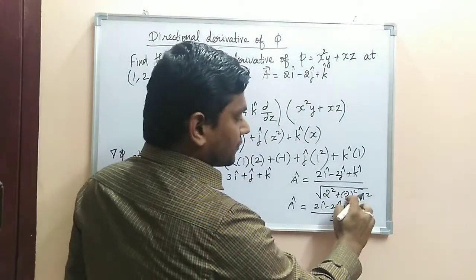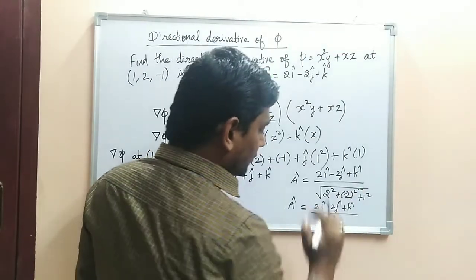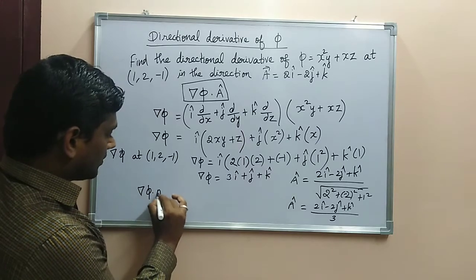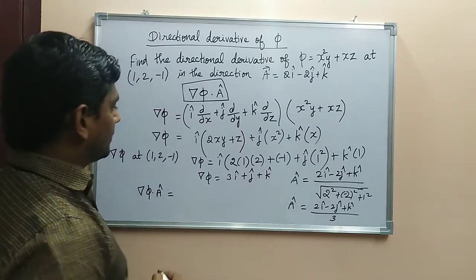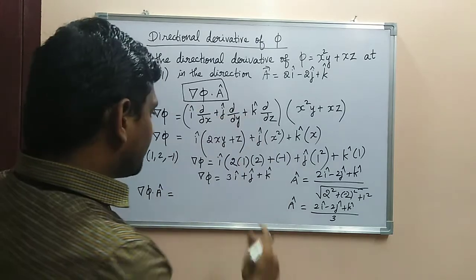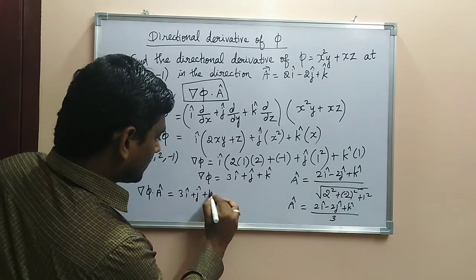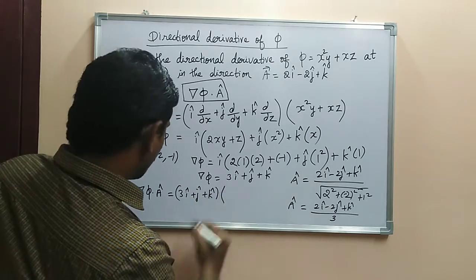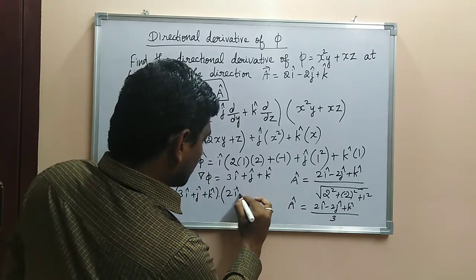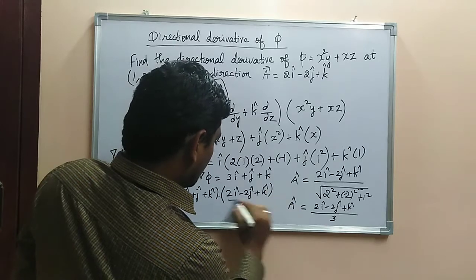So 4 + 4, that is 8 + 1 = 9, square root of 9 gives 3. So in order to find out the directional derivative you have to put like this. So ∇Φ is actually 3i + j + k, dot product with (2i - 2j + k) divided by 3.